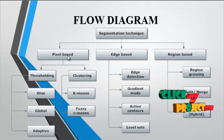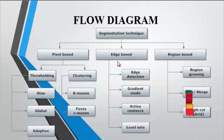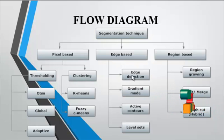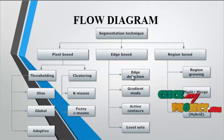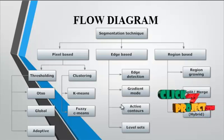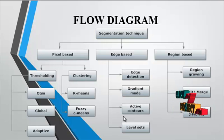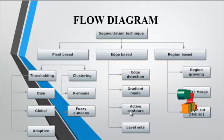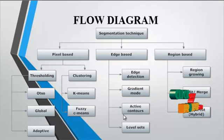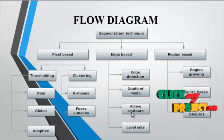After completion of the pixel-based method, we apply the edge-based method. In the edge-based method, we detect edges from the region of interest using gradient mode, active contours, and level set. For active contours, we first binarize the image into 0s and 1s, detecting the region of interest pixels as 1s. After finding the region of interest, the contour is detected for those region of interest boundaries.